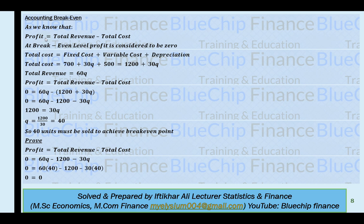For accounting break-even, total cost equals fixed cost plus variable cost plus depreciation: 700 plus 30Q plus 500, simplifying to 1,200 plus 30Q. Total revenue is 60Q. Setting profit to zero: 0 equals 60Q minus (1,200 plus 30Q). After simplification, Q equals 40 units. So 40 units must be sold to achieve the accounting break-even point.